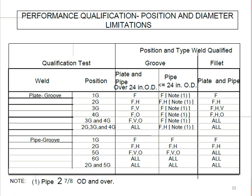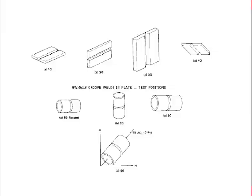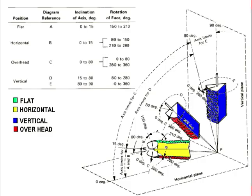This position chart is very important to remember. The plate positions 1G, 2G, 3G, and 4G represent flat, horizontal, vertical, and overhead respectively. For pipe: 1G is rotated, 2G is horizontal fixed, 5G is fixed and not rotated, and 6G is at a 45-degree angle. These positions are shown in a common diagram with flat, horizontal, vertical, and overhead labeled on a plot plan.